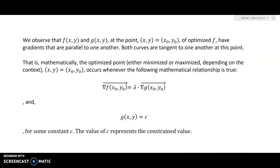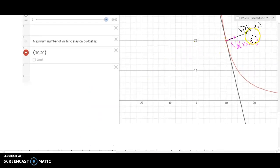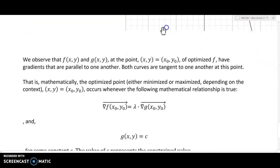Now there's more proof behind this than we're going to let on, but for all intents and purposes, this is substantial for us to make a claim that is in fact mathematically true. To formalize this, we're going to say that we observe that f(x,y) and g(x,y) at the point (x₀, y₀) of optimized f - that's the highest number of visits we could have - have gradients that are parallel to one another. They're not necessarily the same length, but they are going to point in either exactly the same or perhaps one of them will point in the opposite direction. Both curves are tangent to one another, or I should say parallel to one another.